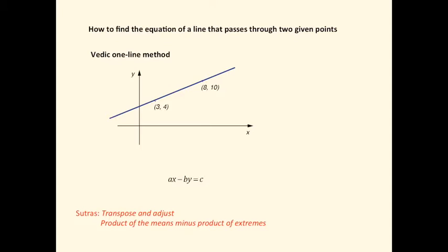What's required here is to find the values of a, b, and c and put them into the general equation. For the value of a, the coefficient of x, we find the difference in the y coordinates. So that's 10 minus 4 is 6.